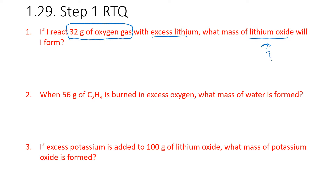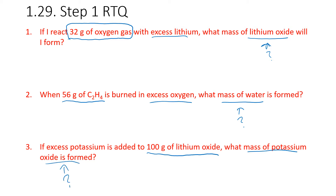Number two: when 56 grams of C2H4 is burned in excess oxygen, what mass of water is formed? So we know we have 56 grams of C2H4, we have excess oxygen, and we're asked about the mass of water. For number three, if excess potassium is added to 100 grams of lithium oxide, what mass of potassium oxide is formed? So we've figured out what we have and what we're calculating.